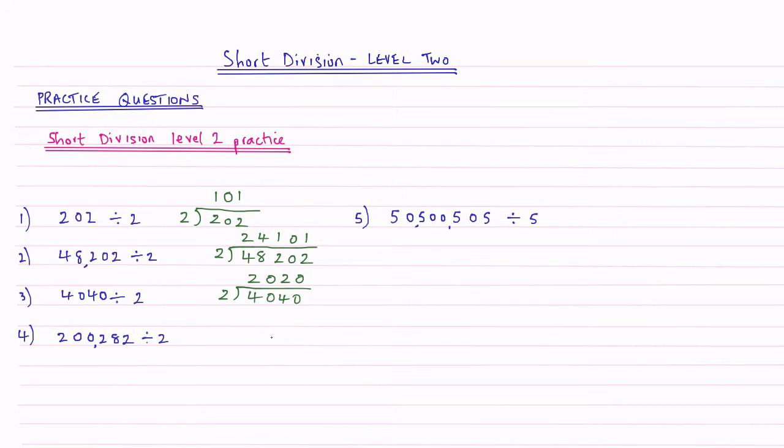Example 4, or question 4 rather. Line, curly brace. So this is 200,282. We're now dividing this by 2. 2s into 2 go once. Then we've got two 0s there.